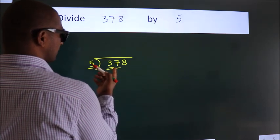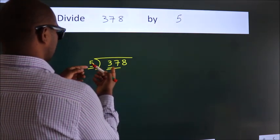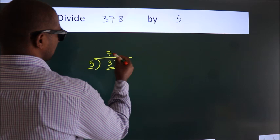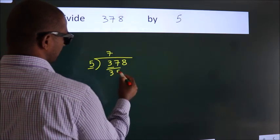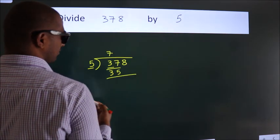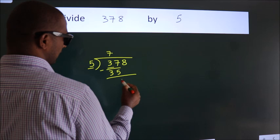A number close to 37 in the 5 table is 5 times 7 equals 35. Now we should subtract. We get 2.